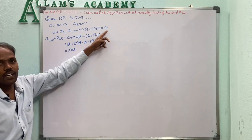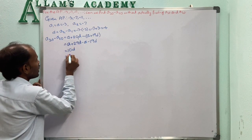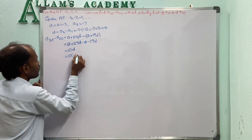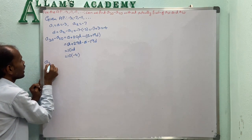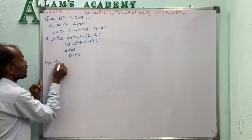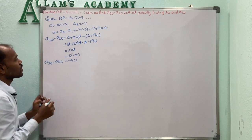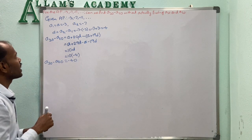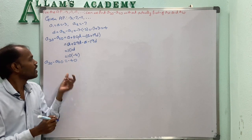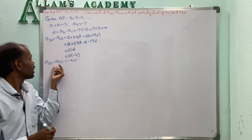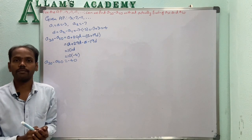We know D equals -4, so substituting: 10 into -4 equals -40. Therefore A30 minus A20 equals -40. Without finding A30 and A20 individually, we found A30 minus A20.